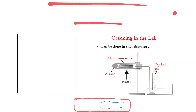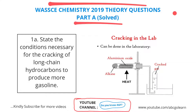Question number one asks for the conditions necessary for the cracking of long-chain hydrocarbons to produce more gasoline. Cracking is actually the second process of refining petroleum — refining crude oil. The first process is fractional distillation, then we have cracking, and then we also have reforming. So the process of refining crude oil takes place by three methods: fractional distillation, cracking, and reforming.